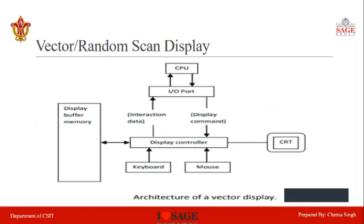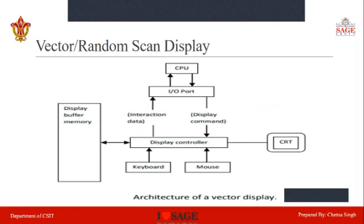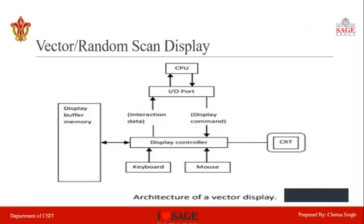Here you can see the cathode ray tube is connected with the display controller, and this display controller is connected with keyboard and mouse input devices and an I/O port with the CPU. This display controller is also connected with the display buffer memory, which stores the information that is then projected onto the cathode ray tube.